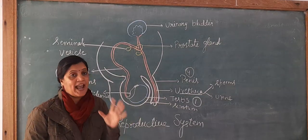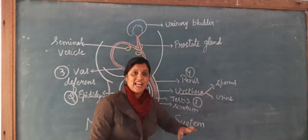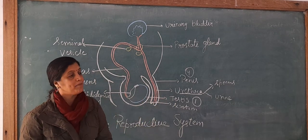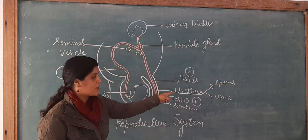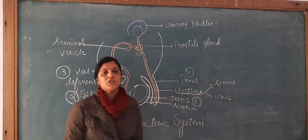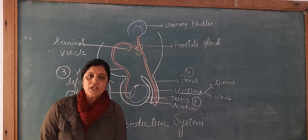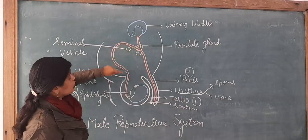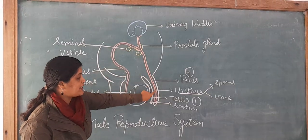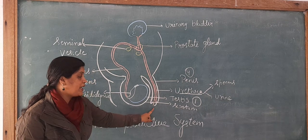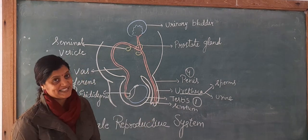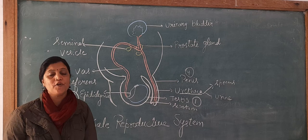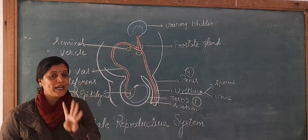It is called the urino-genital tract because it is a common passage for sperms and urine. If an objective question is asked — what is the common passage for sperms and urine — you have to write urethra. The sperms come from the vas deferens and finally come into the urethra, which opens out through the penis. The penis is the fourth main male reproductive part.